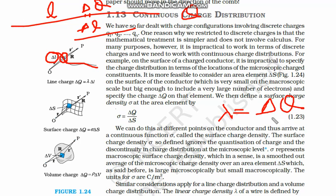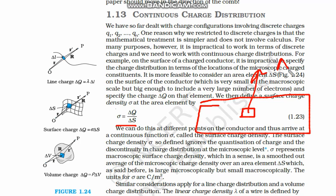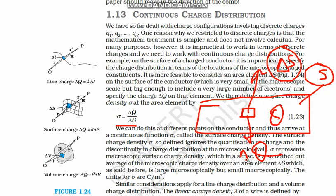For a line, the linear charge density lambda is defined as delta-q divided by delta-l. Moving to surface charge density sigma: there is a total surface S, with a small element delta-S. The whole area is S, the whole charge is Q, and the small charge on the small element is delta-q. Surface charge density sigma equals delta-q divided by delta-S.